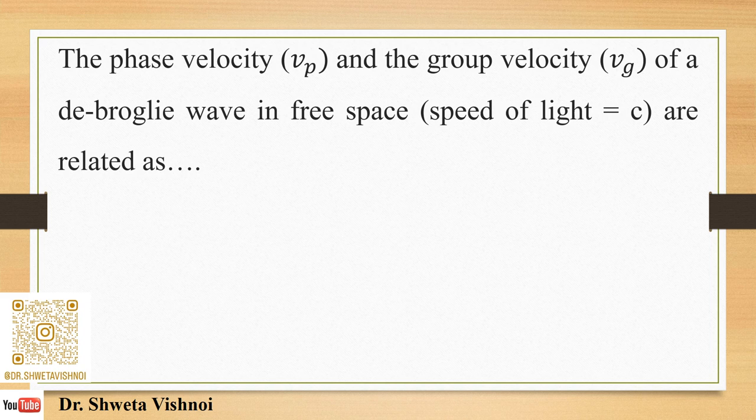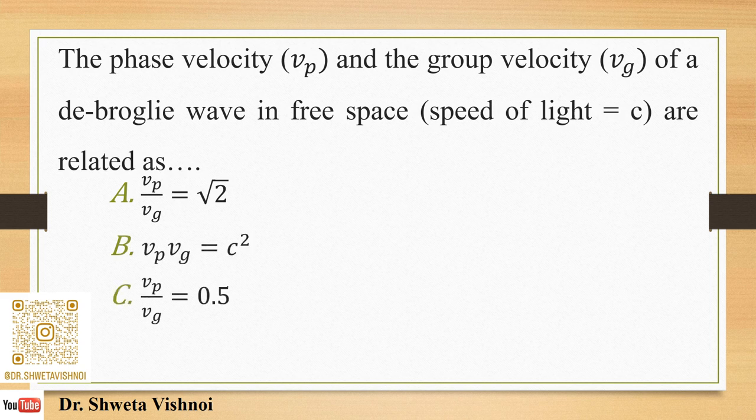Next question: The phase velocity vp and the group velocity vg of a de Broglie wave in free space, relative to speed of light c, are related as: (A) vp/vg = √2, (B) vp·vg = c², (C) vp/vg = 0.5, (D) vp·vg = √2 c².